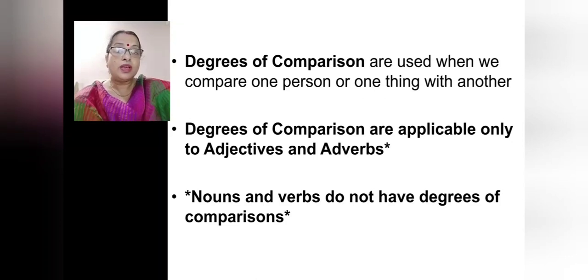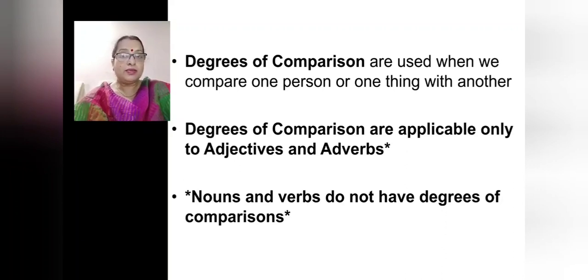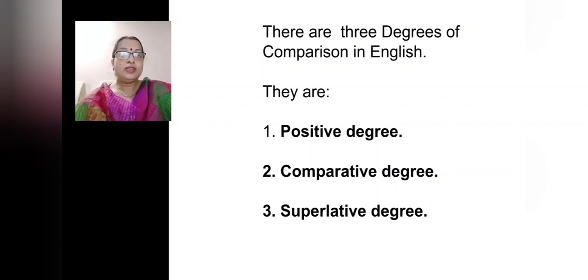Now that we have understood what an adjective and adverb are, let us go ahead with comparison. In English grammar, there are technical terms for the three levels of comparison of adjectives and adverbs. The basic level is positive, the next is comparative, and the final level is superlative. The three degrees of comparison are: positive degree, comparative degree, and superlative degree.